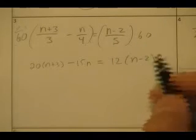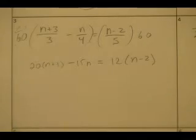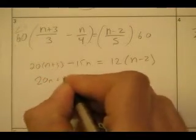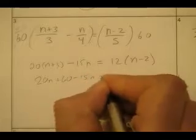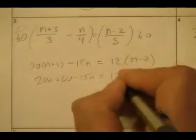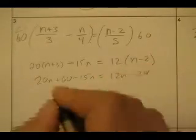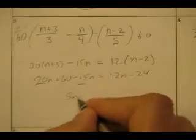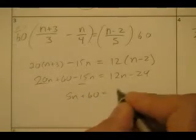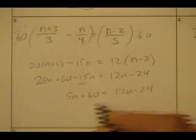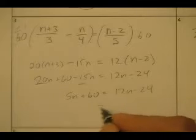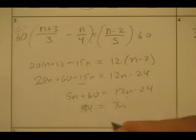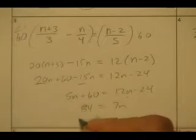60 divided by 5 is 12. Now I distribute: 20N plus 60 minus 15N equals 12N minus 24. I've got 20N and negative 15N. I subtract and get 7N. Add 24 and I get 84. Therefore N must be 12.